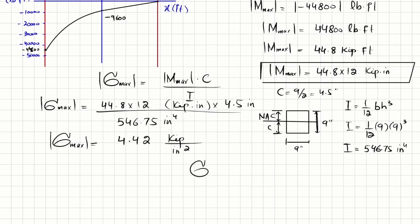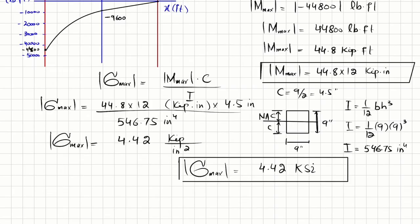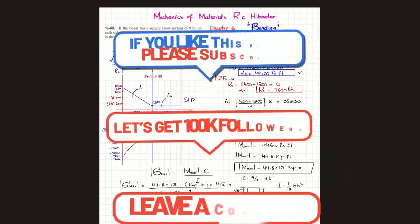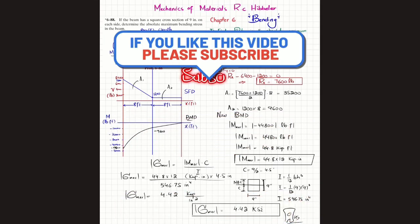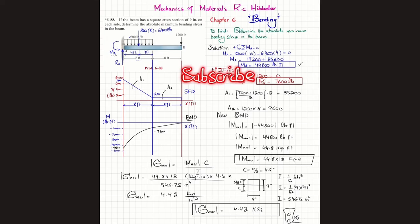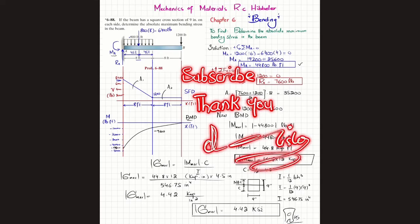The maximum absolute value of bending stress is 4.42 ksi, which is kilo-pounds per square inch. That is the answer for the maximum absolute bending stress for the beam and loading shown. I hope you enjoyed this video. If you are new to my channel, please subscribe and press the bell icon for notifications about my latest videos. If you have any questions, ask in the comment section. Thank you for watching.